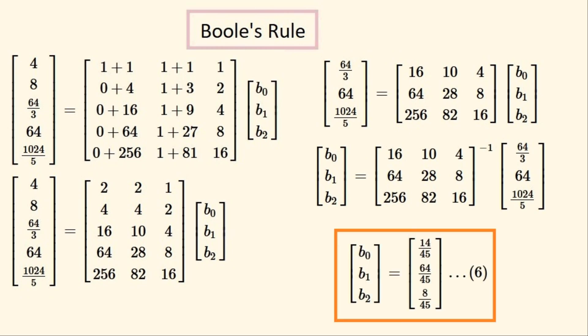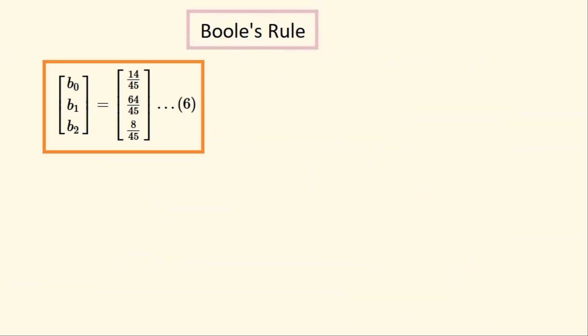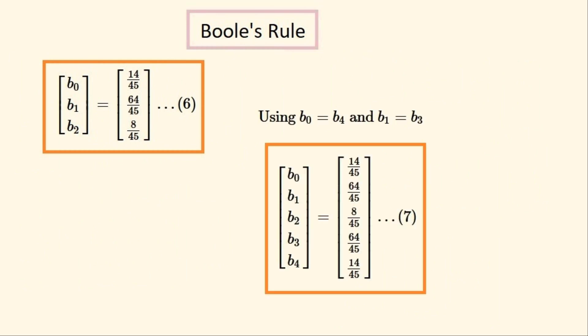And so then we'll get these values for this vector, which is equal to the first three coefficients of Boole's rule. I'll just write it out again up here. Then we can expand this vector out so it can calculate a segment with five function values at a time. And then it can be substituted into the standard equation for Boole's rule like it can for Simpson's rules.